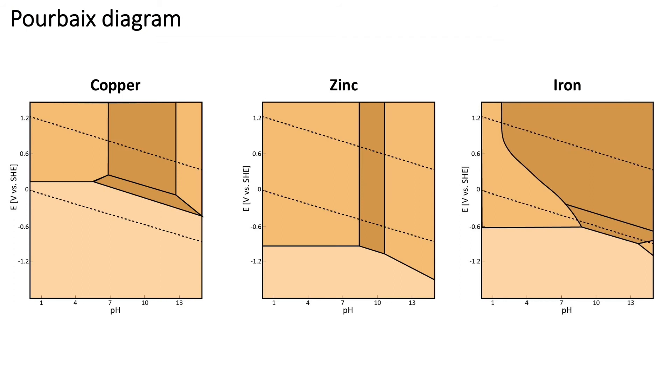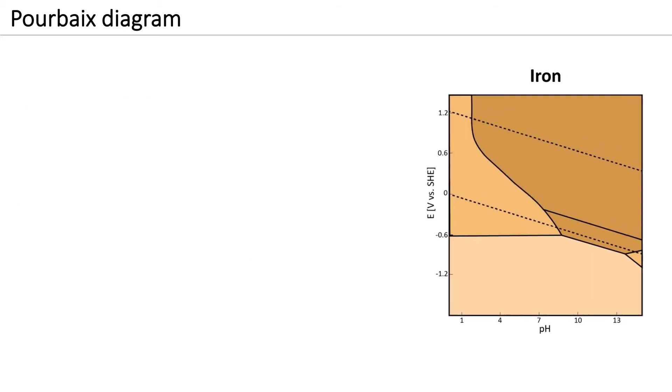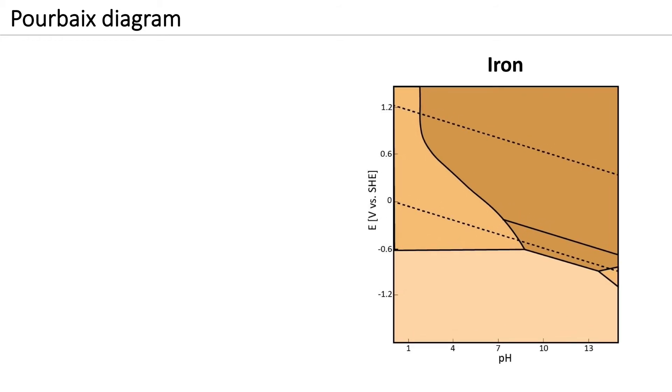Therefore, it is common to represent the equilibrium states in potential pH diagrams. These diagrams are also called Pourbaix diagrams. Every metal has its own specific Pourbaix diagram. Let us take a closer look at the Pourbaix diagram for iron.